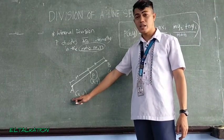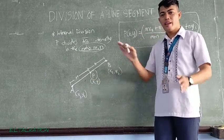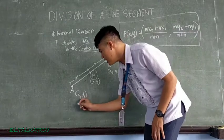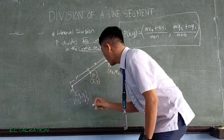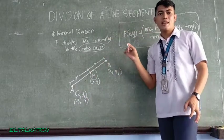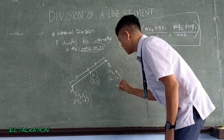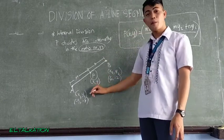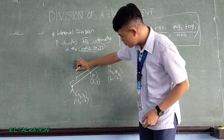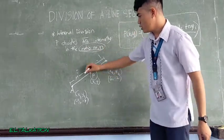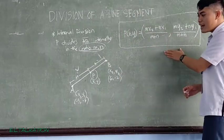Find the coordinate of P or point P if the coordinate of A is negative 3 and negative 8, while the point B is 6 and negative 2. So let's find the coordinate of point P. So the ratio is 2 is to 1. So our M here is 2 and our N is 1. So just substitute the values in the formulas.